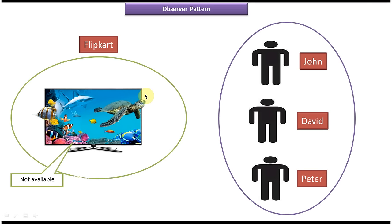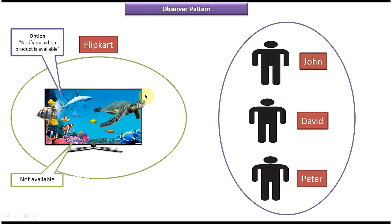But these 3 persons want to buy that particular brand of LED TV. So in the Flipkart site there is an option called 'notify me when product is available.' These 3 persons can register to this option, so that whenever the product is available, the Flipkart site will send a notification to these users. So John, David and Peter registered to this option when the LED TV was not available.